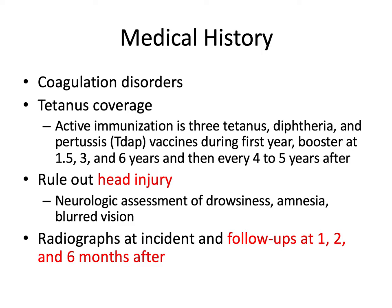When a patient comes to the clinic with dental trauma, there are relevant medical history questions we need to ask. Do they have any coagulation disorders — thinking about bleeding risk? Do they have tetanus coverage? Tetanus is caused by a bacterial infection inflicted by a puncture wound or falling into dirt. Active immunization is three Tdap vaccines during the first year, boosters at 1.5, 3, and 6 years, and then every four to five years after that. If they're uncovered, they need a tetanus antitoxin; if coverage is outdated, they can get a booster.